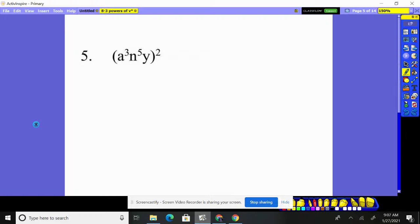Number five, it wants us to square the entire thing. That means I'm taking the a cubed n to the fifth y and multiplying it by itself. That's how I need to always look at this. Whenever it has something squared, you're taking the entire thing and multiplying by itself.